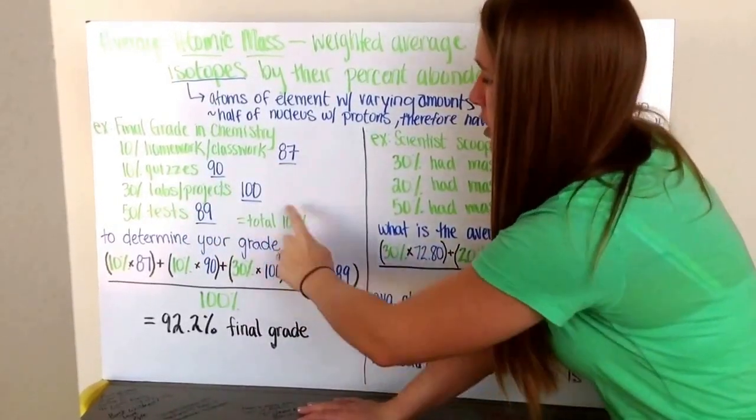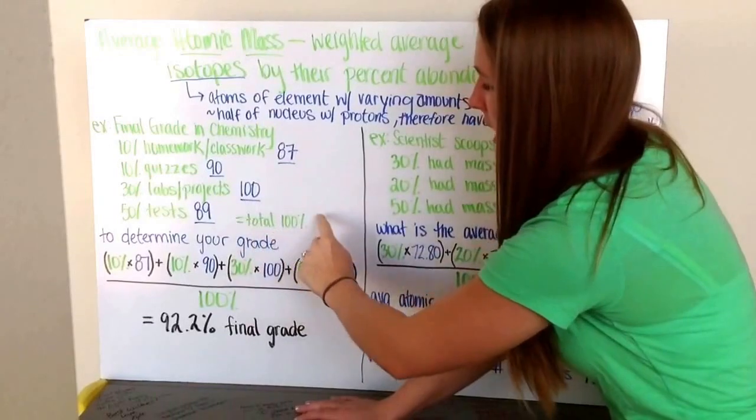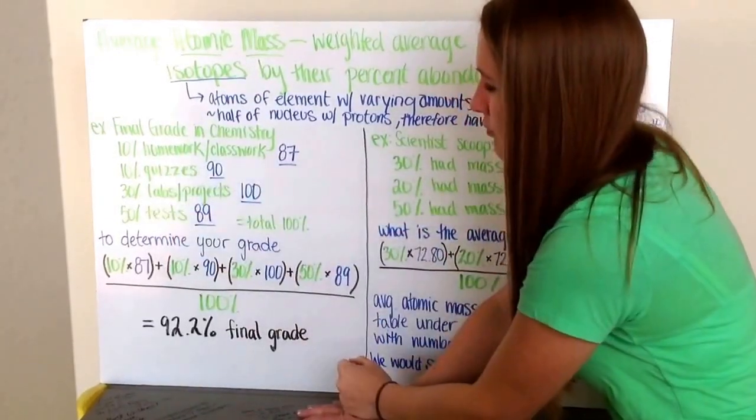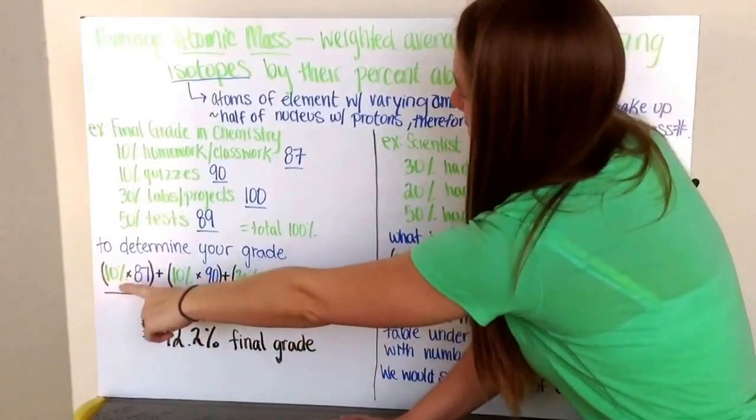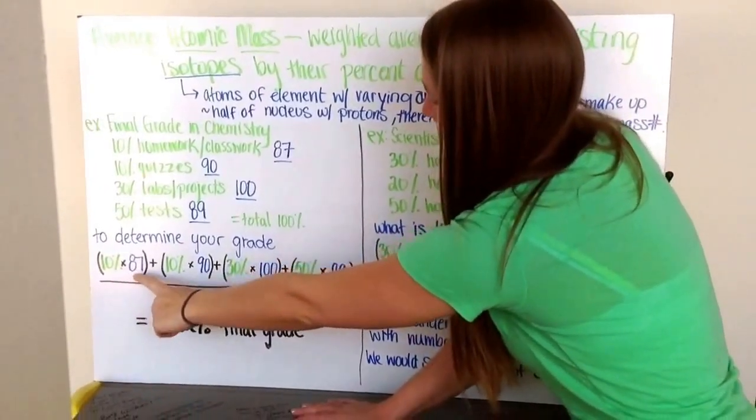Your total percent is 100%, which is what all of these add up to. To determine your grade, you take 10% of 87 for homework and classwork,